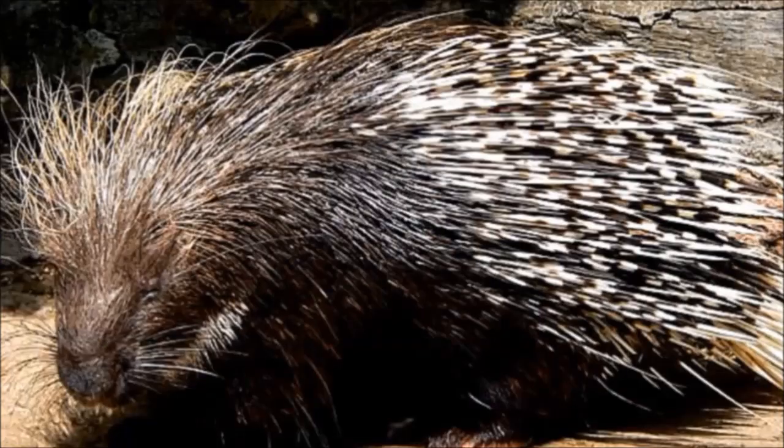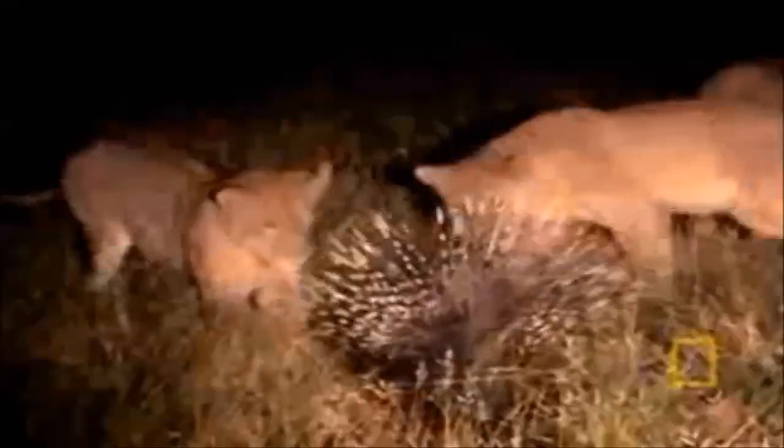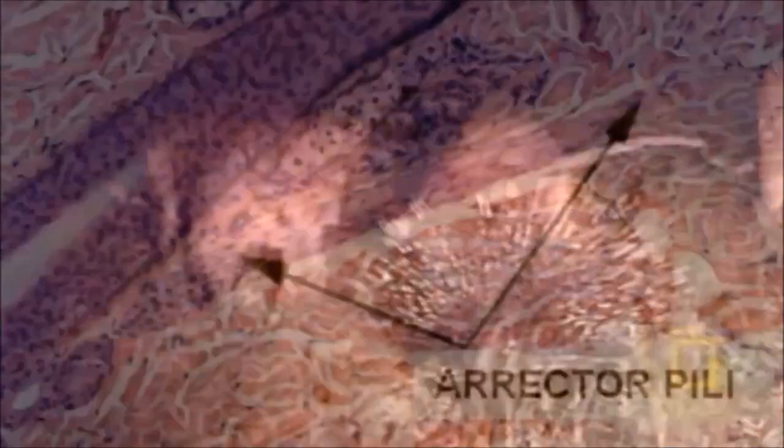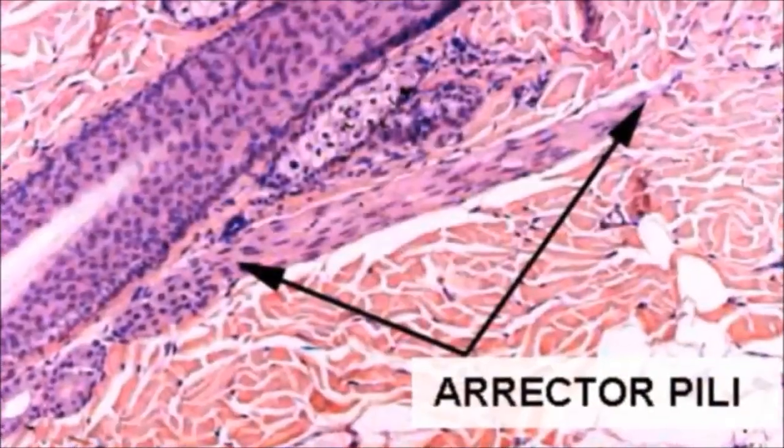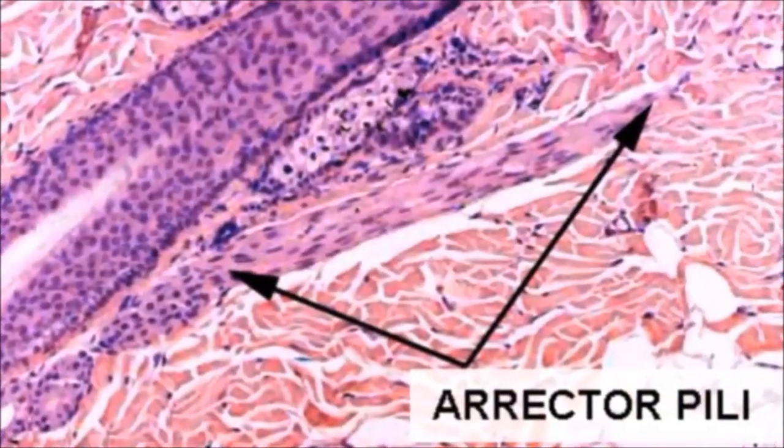This is also the way porcupines project their quills toward an oncoming predator. However, humans no longer have control over the erector pili muscle, and due to our lack of hair, any benefit our ancestors might have gained by employing these structures has now been rendered useless within Homo sapiens.